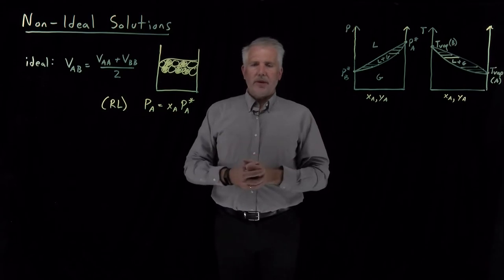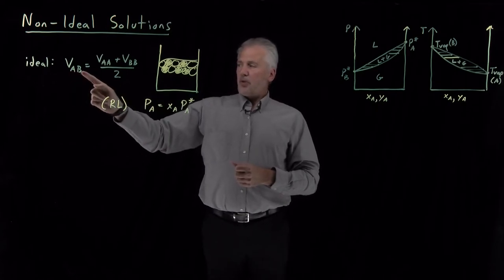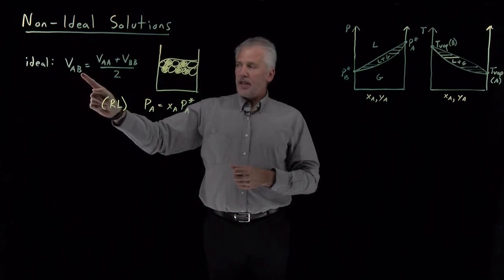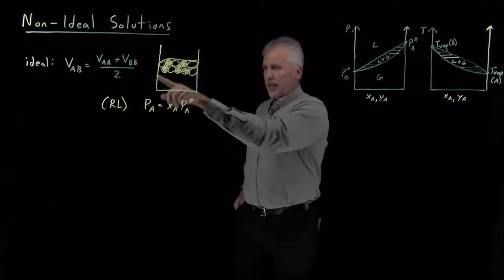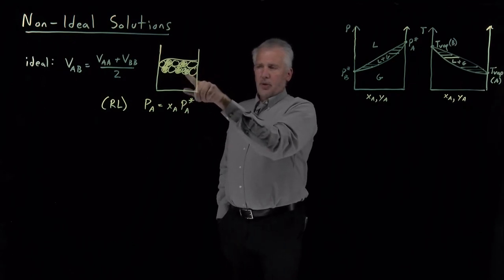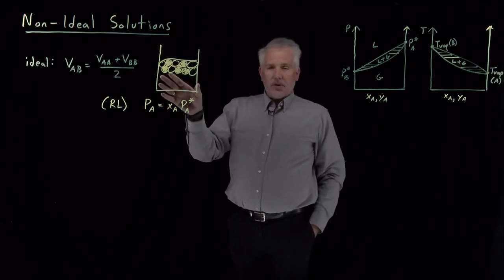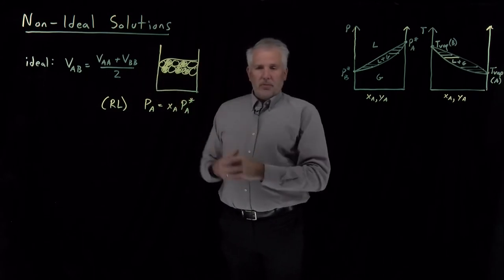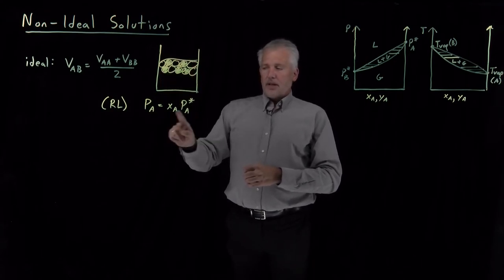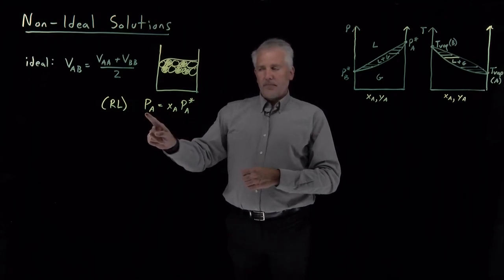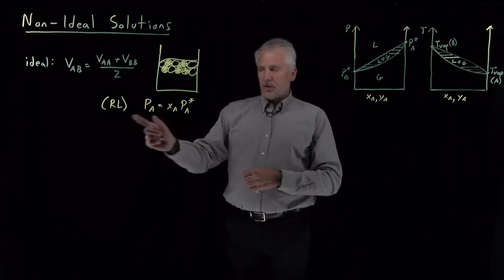Let's summarize everything we know about ideal solutions. Our model for an ideal solution is essentially saying the AB interaction — between the two different solvents — is the average of the homogeneous AA interaction and the homogeneous BB interaction. Structurally, if half of the molecules are A molecules, they appear distributed randomly throughout the system, and only half of the molecules at the surface are A molecules, so the partial pressure above the solution is half the pure vapor pressure. That's Raoult's law.